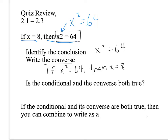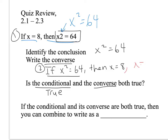Next part: are the conditional and the converse both true? Let's look at the conditional statement first. If x equals 8, then x squared equals 64 — that's true because 8 squared equals 64. Now the converse: if x squared equals 64, then x equals 8. That's actually false because x could also be negative 8.